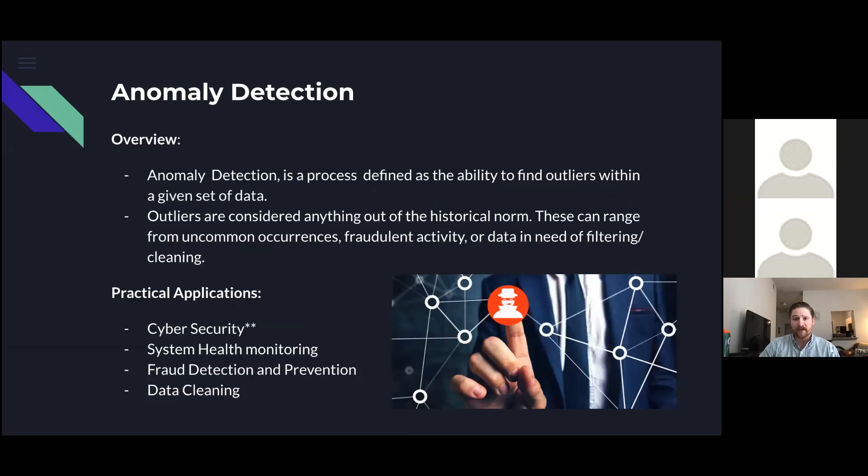Anomaly detection can be defined as the ability or process of finding outliers within a given data set. Anomalies are data points or values that do not fit the historical patterns or tendencies. So the concept of training a machine to predict instances that do not frequently occur is a bit more tricky than one would initially think.